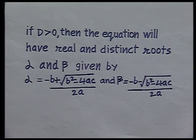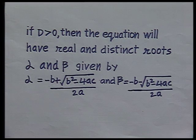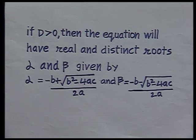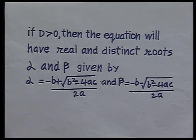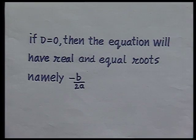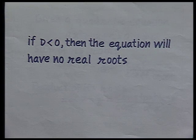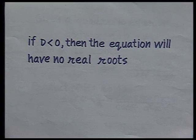If D is greater than 0, then the equation will have real and distinct roots alpha and beta, given by alpha = (-b + √(b²-4ac)) / 2a and beta = (-b - √(b²-4ac)) / 2a. If D equals 0, then the equation will have real and equal roots, namely -b / 2a. If D is less than 0, then the equation will have no real roots.